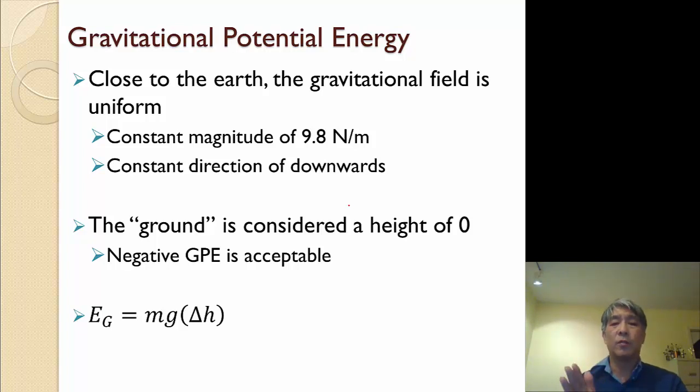The formula that we're going to be using for gravitational potential energy is given on the bottom here, it's the mass of the object times that G, 9.8. So if we were on a different planet, I would have a different G, times the delta H. How high, or what's the difference between the object and its ground level?